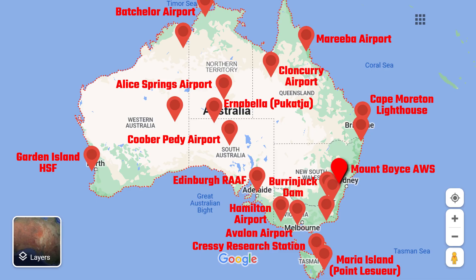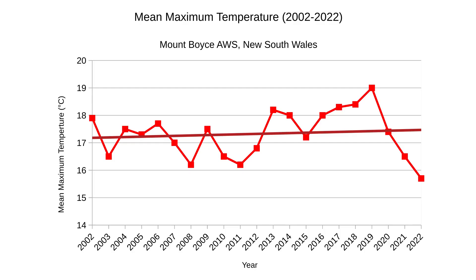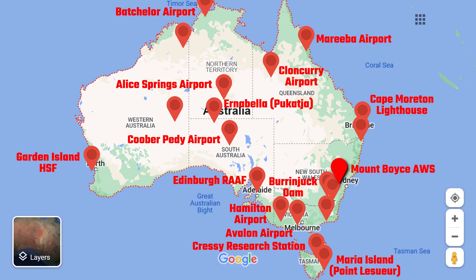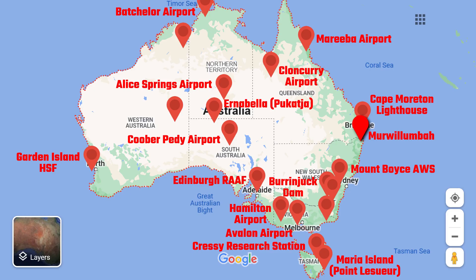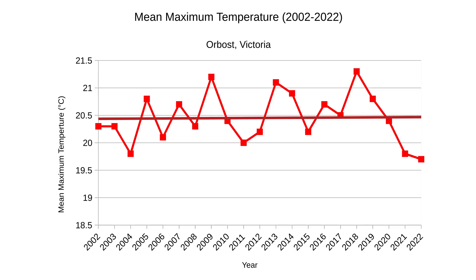Next, we'll head over to Mount Boyce, an automatic weather station in New South Wales as part of the Blue Mountains range. According to the data, it has experienced a slight increase in temperatures over the last two decades. The next location is Mullumbimby, a town in far northeastern New South Wales — it's experienced a slight decrease in average maximum temperatures over the last 20 years. Just four more locations to go until we calculate the average change in maximum temperatures across Australia. Orbost, in the eastern part of Victoria, has pretty much stayed consistent over the last 20 years, perhaps with a very slight rise.